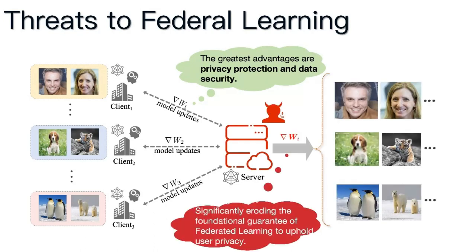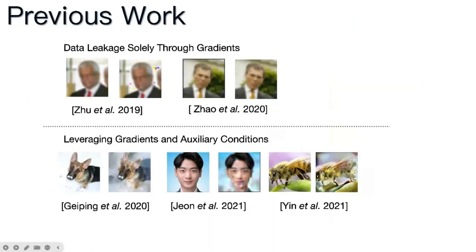Nonetheless, this framework is not entirely foolproof against the leakage of private data. Investigations have revealed that attackers can exploit gradients from model updates to reconstruct private data, significantly eroding the foundational guarantee of federated learning to uphold user privacy. Given the increasing concerns about data security and its ethical implications, gradient-based privacy breaches have garnered significant attention.